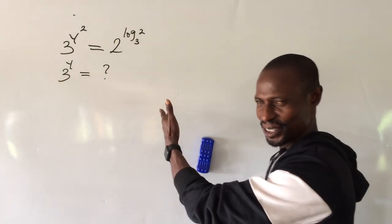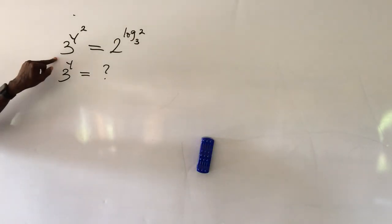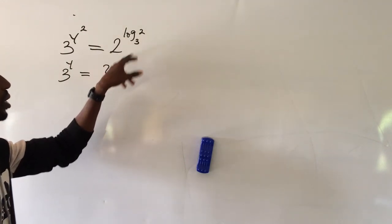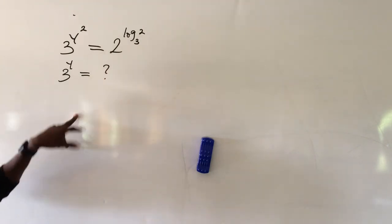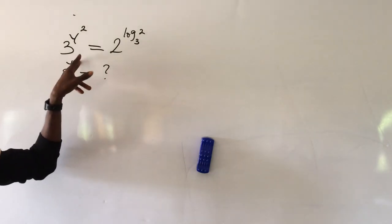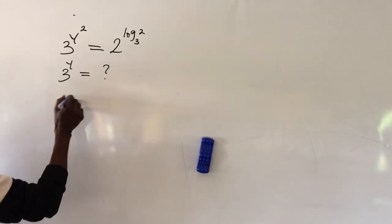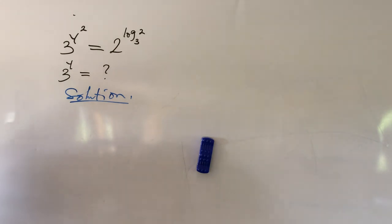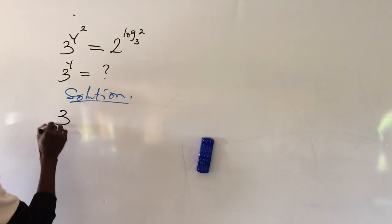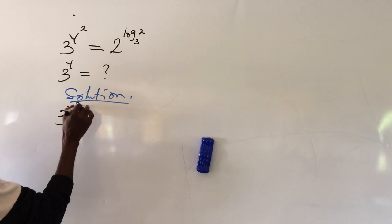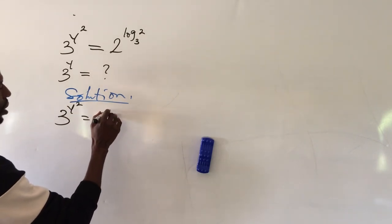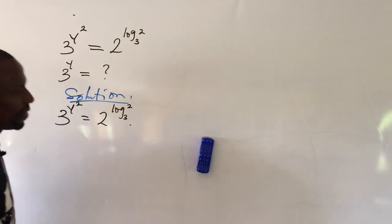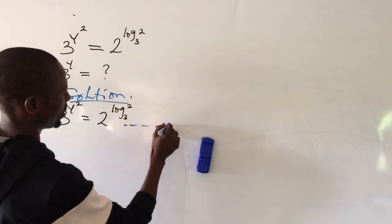With that said, let's go into this challenge. The question says: 3 to the power of y, all to the power of 2, equals 2 to the power of log 2 base 3. Then what would be the value of 3 to the power of y? Let's put down our question — that is equation one.